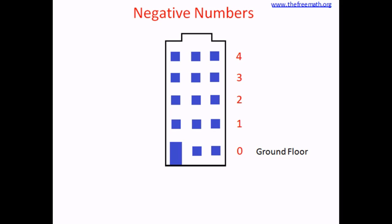Let's label all the floors as zero, one, two, three, four. Whenever we go up one floor we will call it plus one, and whenever we go down one floor we will call it minus one. If you go down two floors, that is minus two. Starting from the ground floor, if the instruction is plus one, you go up one floor and reach the first floor.